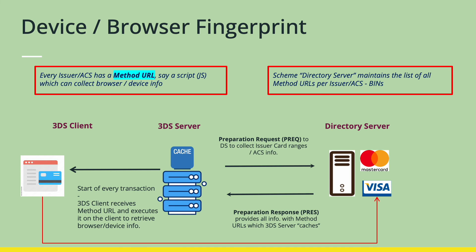Every single transaction has a transaction ID, and for this transaction ID, it provides all the browser and device information. So when the actual authentication requests come, the issuer now has this information to validate against past transaction data and say: yes, this transaction is coming from the same device or browser from where the previous transaction was initiated. And now the issuer has the prerogative to take a decision to skip the second factor for the 3D Secure transaction. This is how the issuers now have more data points and can skip the challenge.